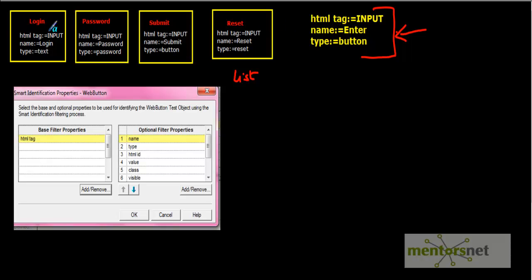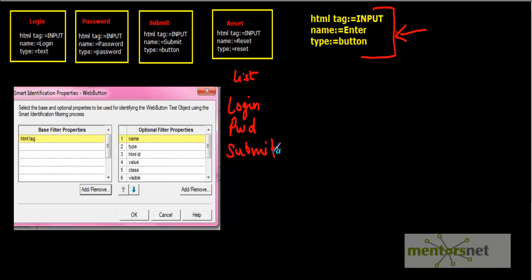QTP checks all four objects to see whose HTML tag is 'input'. Login — yes, it is input, so login enters the list. Password — yes, also input, so it enters the list. Submit and reset — also input. So list one contains all four objects. If only a single object remains in the list, QTP finds that this is the object it is looking for.